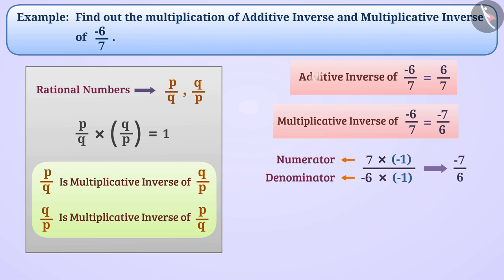Now, we will multiply additive inverse 6 by 7 and multiplicative inverse minus 7 by 6 of minus 6 by 7 with each other. This will be 6 by 7 multiplied by minus 7 by 6 is equal to minus 1. Therefore, minus 1 is the answer to the given question.